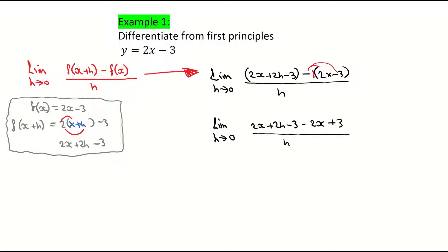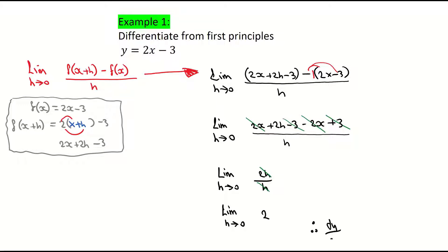You should now see some terms cancelling out. I have 2x minus 2x, which becomes 0, and minus 3 plus 3, which also becomes 0. So the next line is the limit as h approaches 0 of 2h over h. And h divided by h is 1, leaving the limit as h approaches 0 of 2. And that's the answer — 2 is the slope of this curve. You can also write that as dy/dx, the derivative, equals 2.